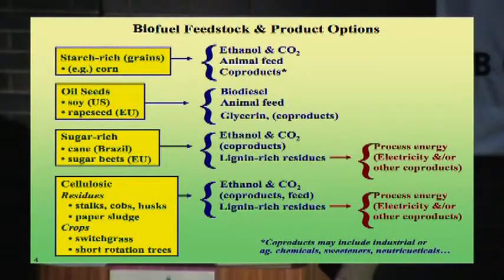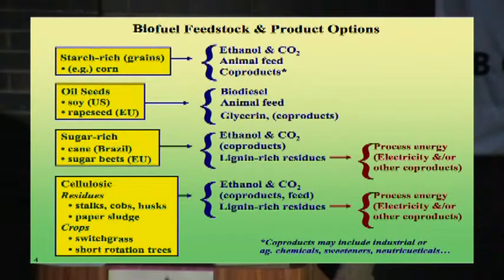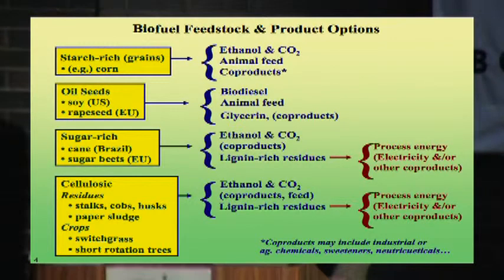With respect to biofuels, we've got four classes of plants we can talk about. We've got starch-rich plants, for example corn; oilseeds; sugar-rich plants like sugarcane and sugar beets; and so-called cellulosic biomass, which can be available either as residues from agriculture or forest products industries, or crops like grasses and short rotation trees.